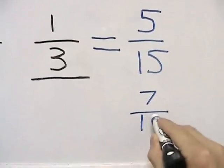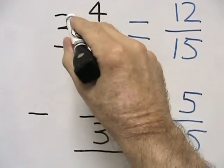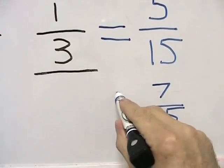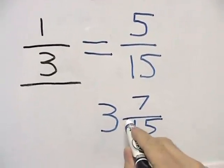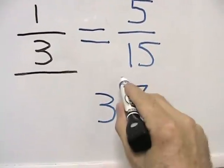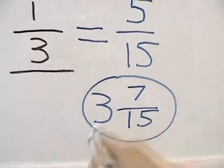We now come back to our whole number. Place it down beside our fraction to get a mixed number, which is our final answer, 3 and 7 fifteenths.